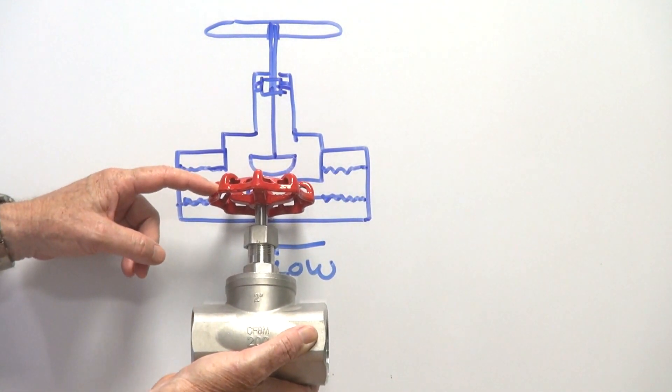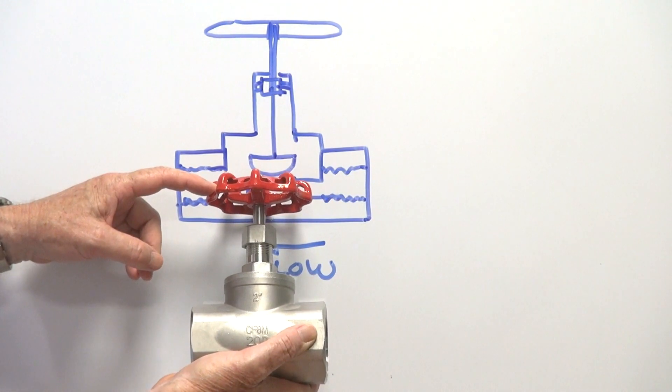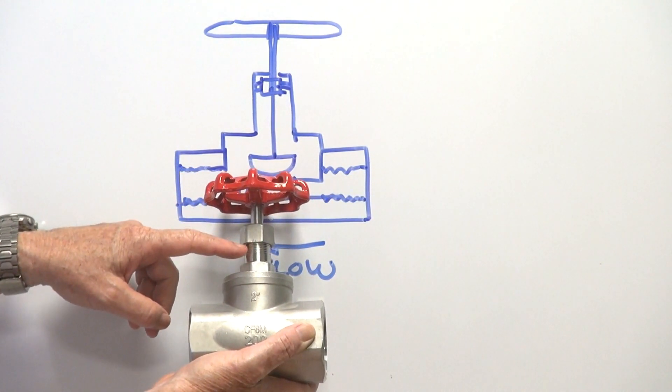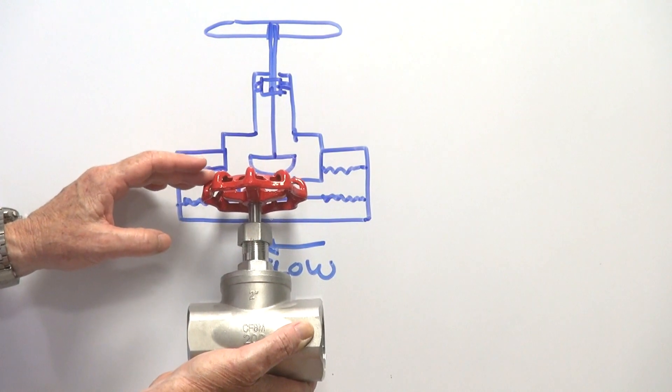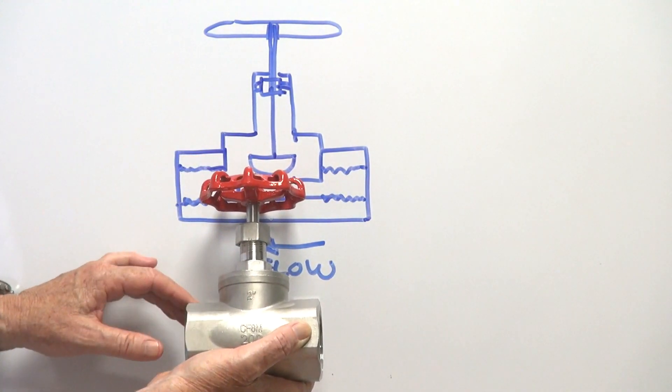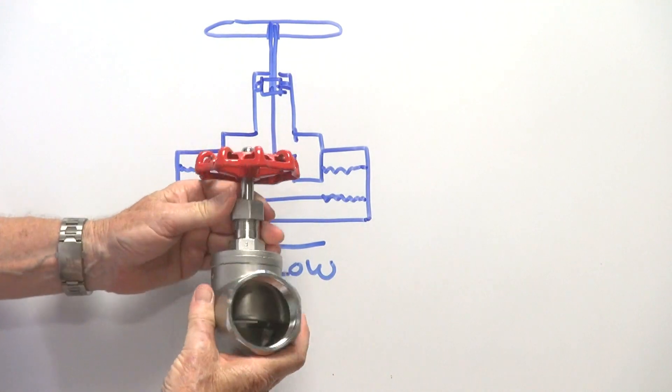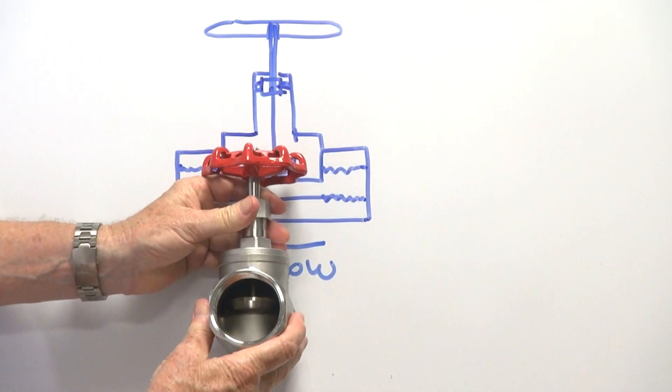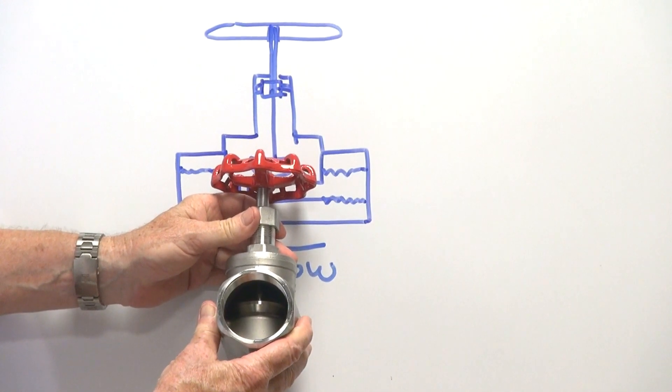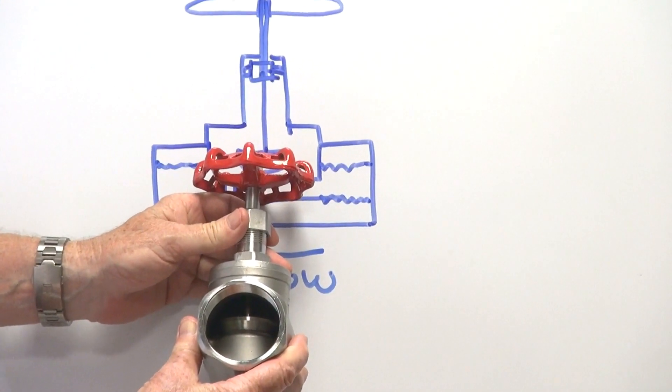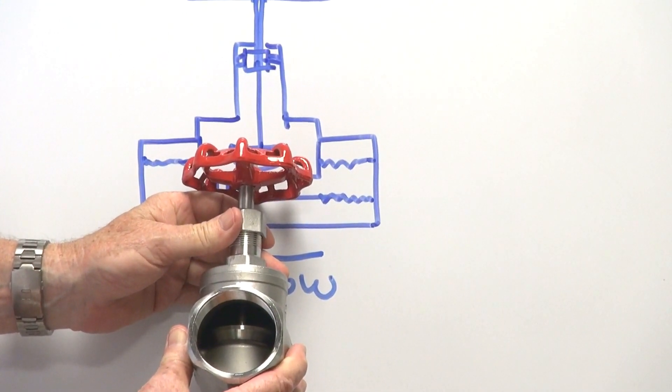Wind the handle up and down and the retained nut inside here with the thread on the stem and the actual globe itself raises and lowers. You can see inside here, if I just turn it around this way, there is the globe inside there and it moves up and down into the seat.